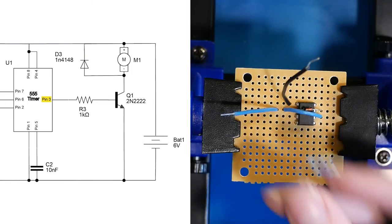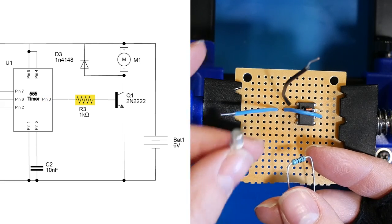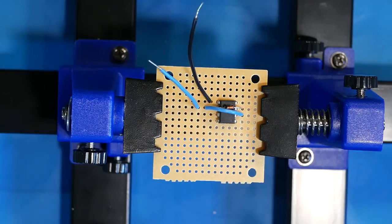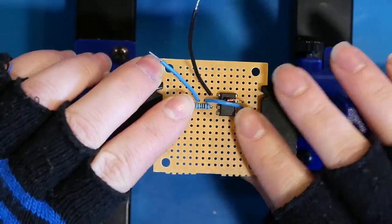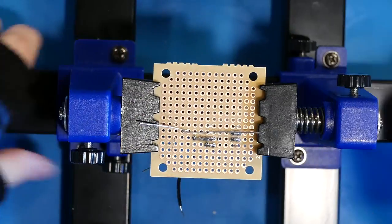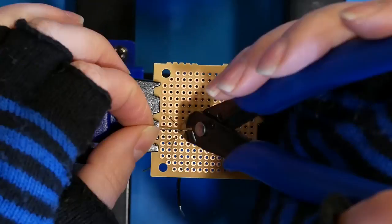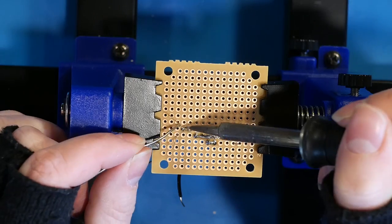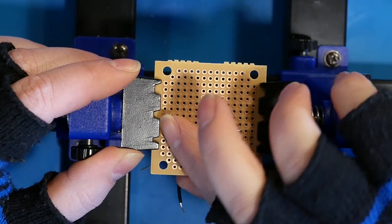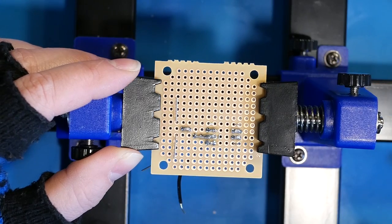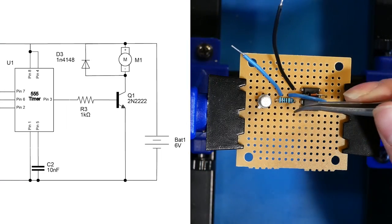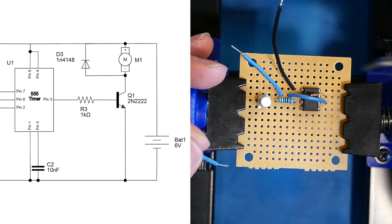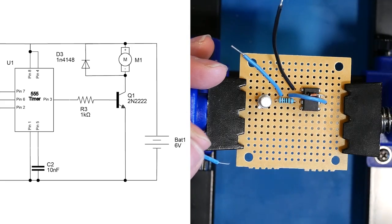From pin three I'm going to add a 1k ohm resistor and it's going to go to the base of our transistor. I'm going to bend the collector and emitter of the transistor down away from each other for use later. You can see on the schematic that pin four and pin eight are jumped together so we'll add a hookup wire for that and then we'll add a red wire next to pin eight because that will go to power later.